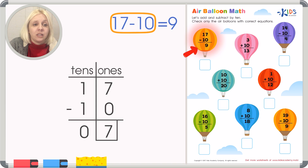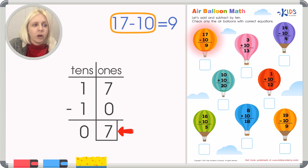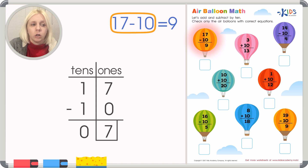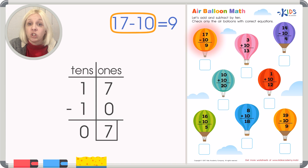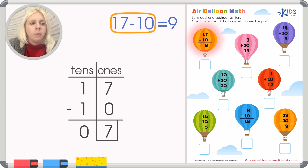Does our answer equal the number they gave us? They said nine, but we got seven — that's not the same. So that's not the correct answer and we won't put a check. But we always want to go back and double-check our math to make sure we didn't make a mistake ourselves. We can also try another way to verify.